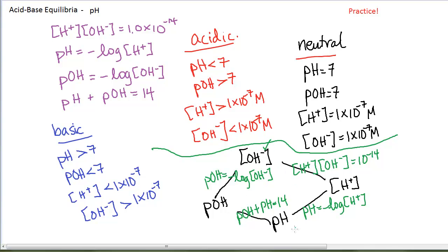If you're given the OH minus and you need to find the pH, you have two routes that you can take, and you can take either route. Just remember not to round your answer in the middle.